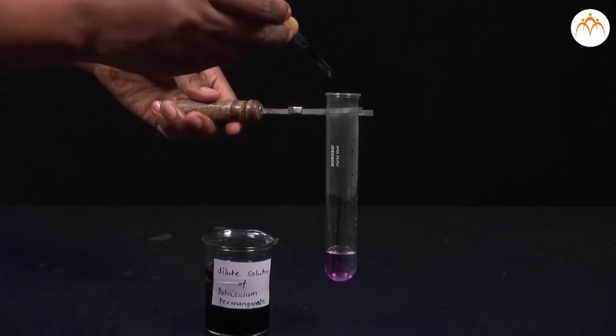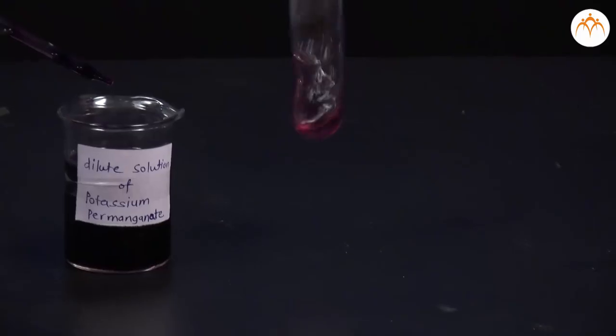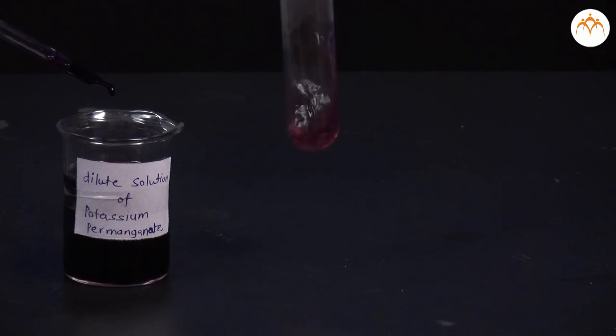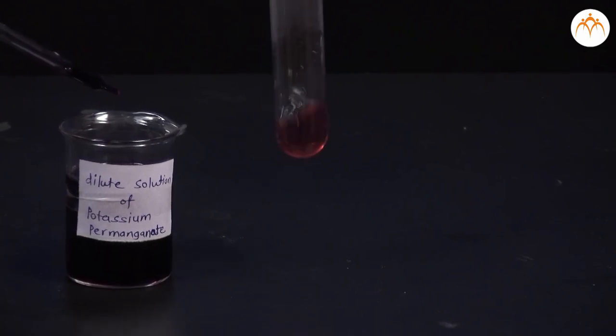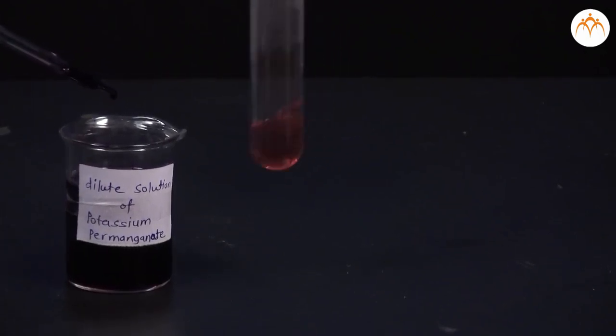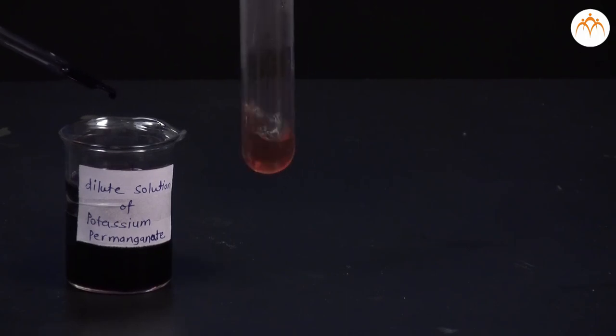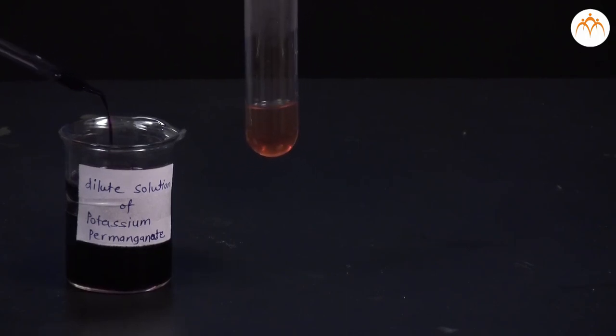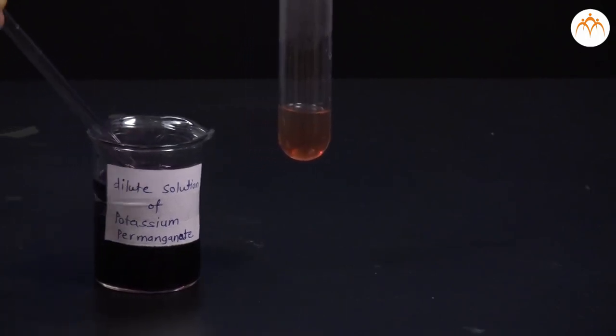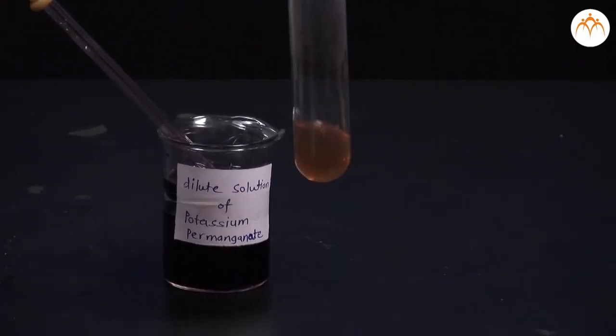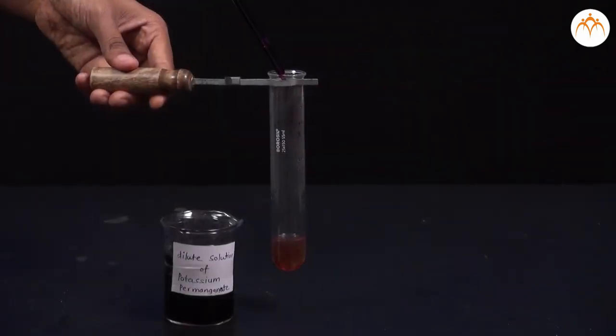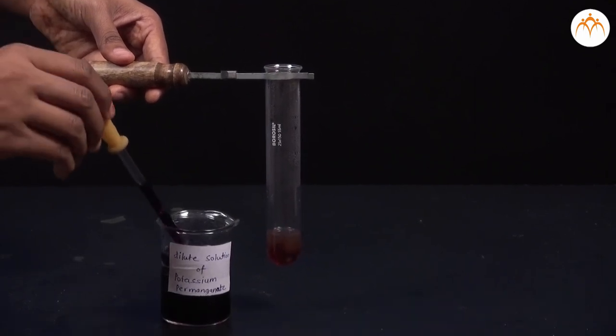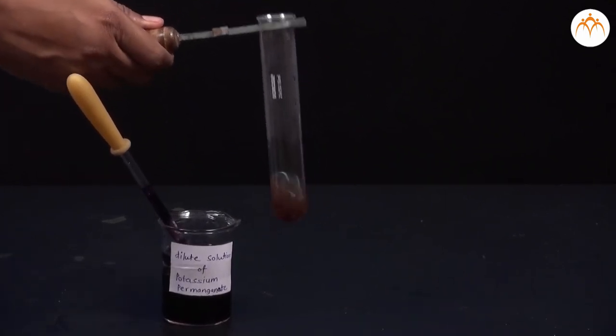We add potassium permanganate drop by drop, keep stirring it continuously. We will observe changes in the pink color. Initially the pink color disappears, but when we continue adding potassium permanganate further, the pink color does not vanish but stays there.